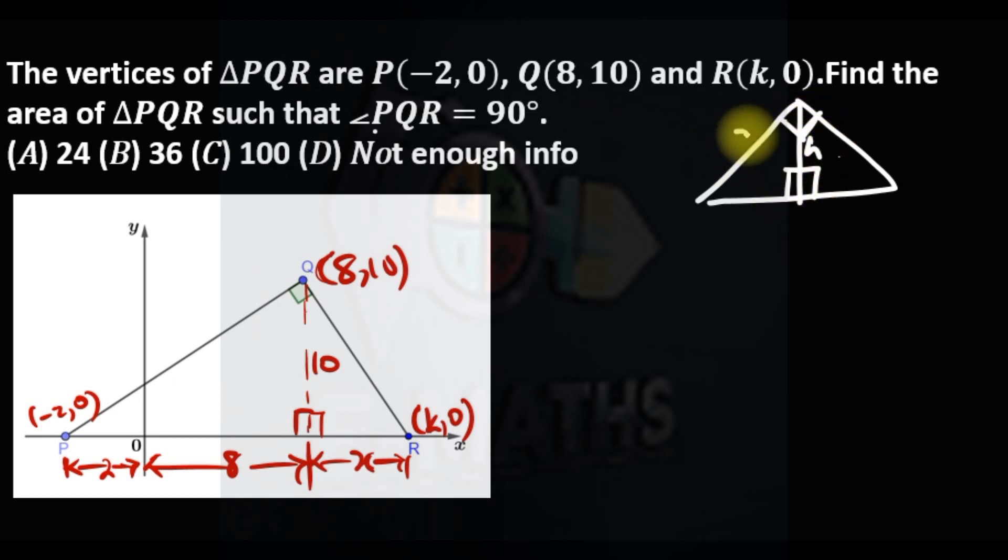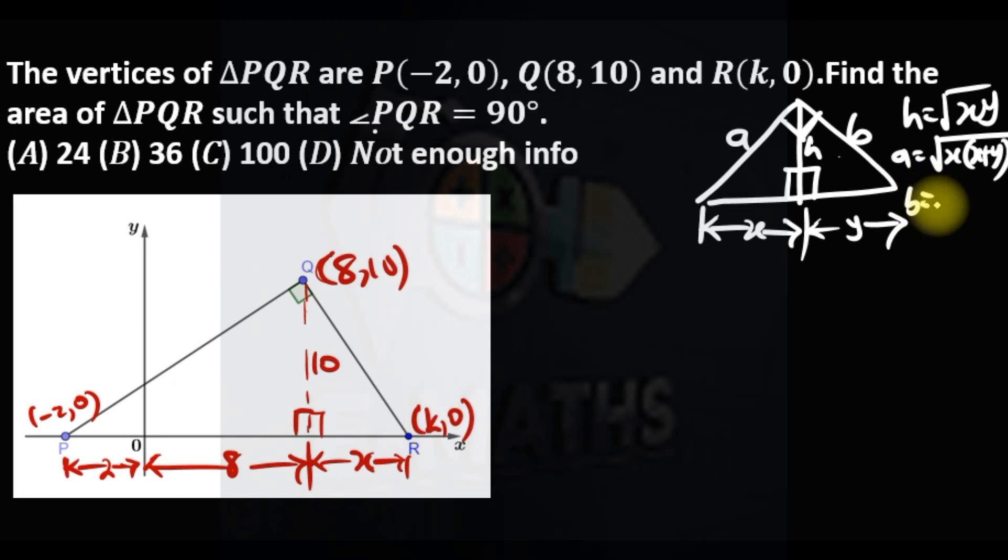...that if here is H, here is a and b, these three sides are related to X and Y such that H is square root of XY, a is square root of X times X plus Y, and finally B is square root of Y times X plus Y. So that's what we are going to use.